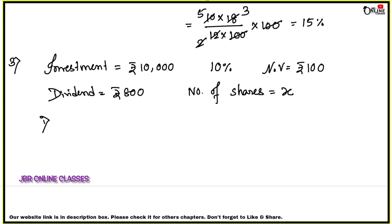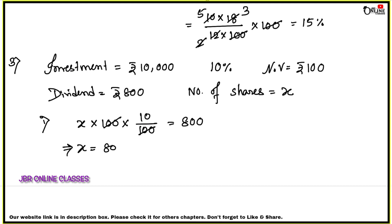First question: find the market value of each share. Apply the total dividend formula: x into 100 into 10 by 100 equals 800. This gives us x, the number of shares. Then market value equals total investment divided by number of shares, which equals 10,000 divided by 80, giving rupees 125. That is your first answer.